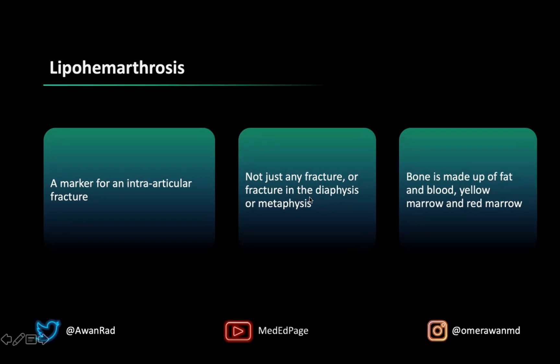The fact that you have fat and blood in the joint space means it's coming from the bone, indicating a fracture — but not just any fracture. It doesn't mean a fracture in the metaphysis or diaphysis. The fracture has to be intraarticular, going all the way to the joint line so that blood and fat can seep out of the bone into the joint space. That's why a lipohemarthrosis is a marker specifically for an intraarticular fracture.